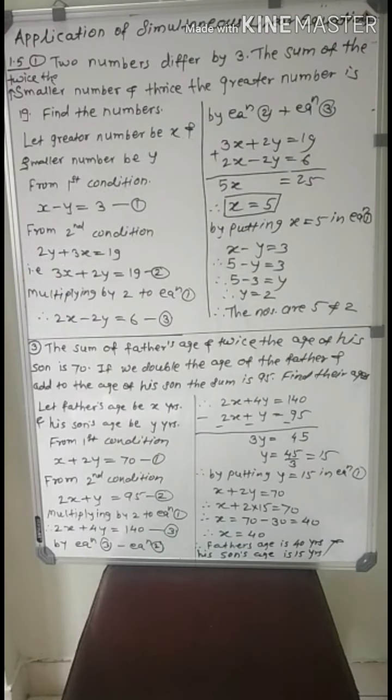So here the numbers are asked. We assume that: let the greater number be x and the smaller number be y. As the condition is two numbers differ by 3, the difference equals the greater number minus the smaller number. So the first equation is x minus y equal to 3. This is equation number 1.